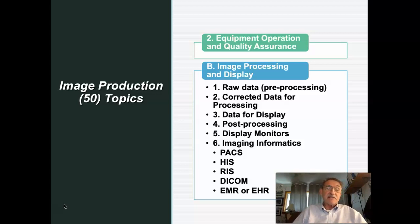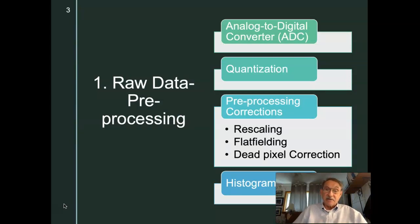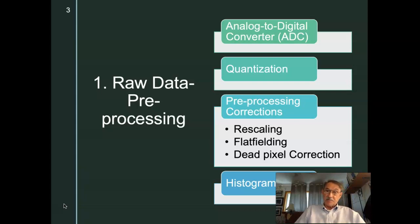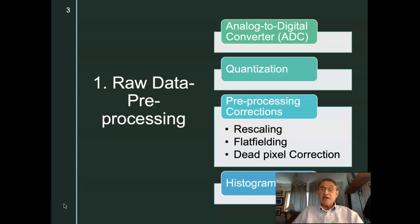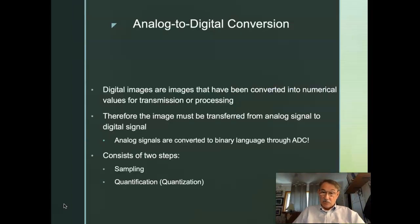Let's talk about raw data — the pre-processing aspect of how the computer gets ready to receive the data from the x-ray exposure. There are a couple of things that we can do to correct the field or level the playing field prior to displaying the image, and those include rescaling, flat fielding, and dead pixel correction.